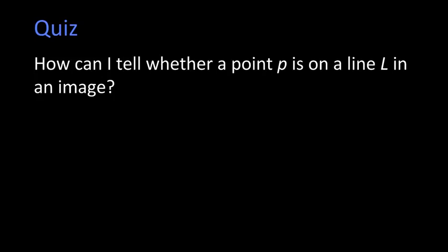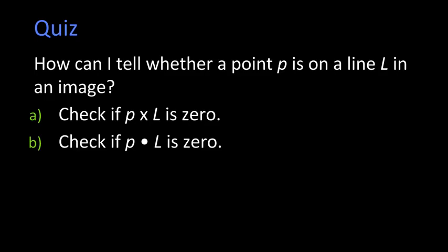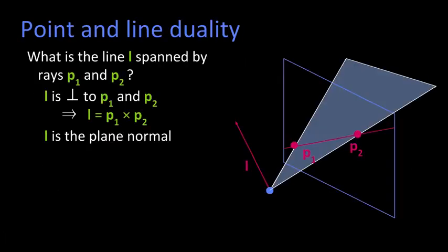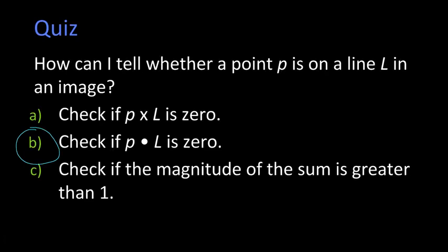Here's a quiz. How can I tell whether a point P is on a line L in the image? I give you a line and a point. How can I tell? A: take the cross product and see if that's 0. B: take the dot product and see if that's 0. C: check they're both three-vectors, so I can add them and check if the magnitude of the sum is greater than 1. Thinking about it this way, I have some point P in the middle there. That projective ray is in that plane and is therefore perpendicular to the original line. So basically, you would just take the dot product between P and L, and if that's 0, then that point P is on the line. The answer is B. Isn't that right, Megan? Yes. She's right, she's paying attention.